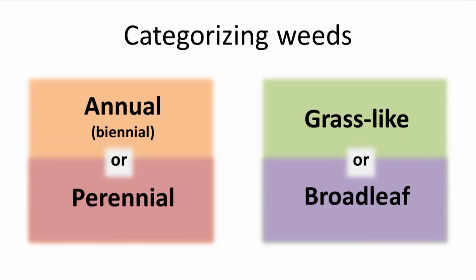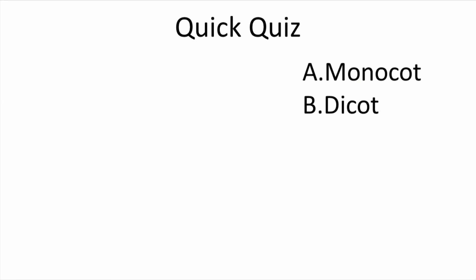The other important distinction to know is whether a weed is a grass-like or broadleaf plant. Remember, grass-like plants are monocots, and broadleaf plants are dicots, as discussed in previous botany classes. To mix up the pace, let's have a quick quiz to remind ourselves the difference between a monocot and dicot. When each picture flashes, decide whether it's a monocot or dicot.